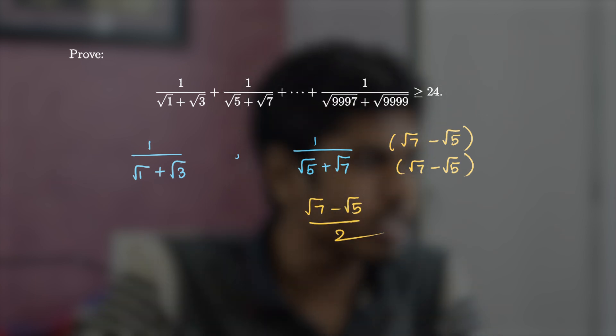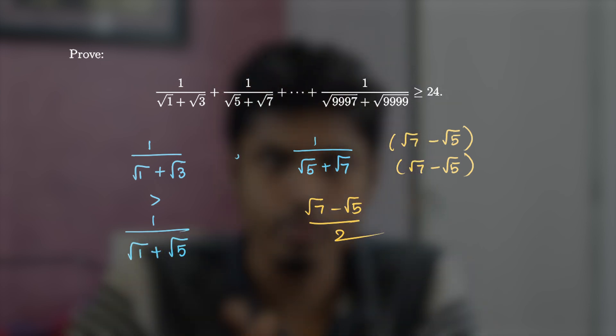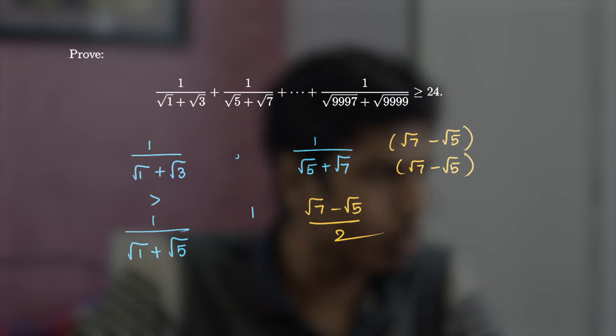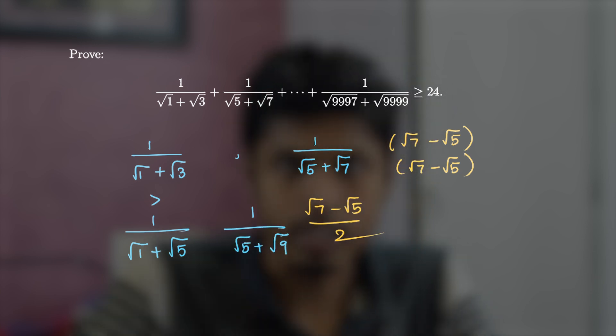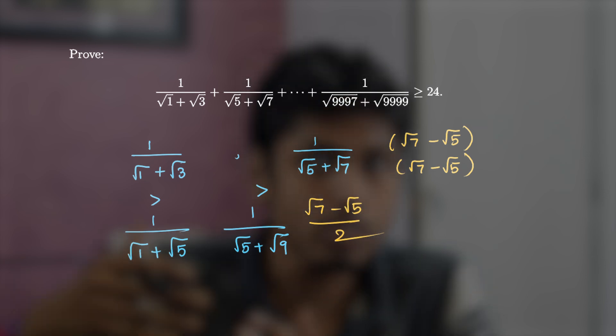Instead of considering the first term as 1 by 1 plus root 3, I may consider the first term as 1 by root of 1 plus root of 5, and the second term to be 1 by root of 5 plus root of 9. You can see root 5 is common between the first and second terms, and root 9 will be common between the second and third terms and so on.